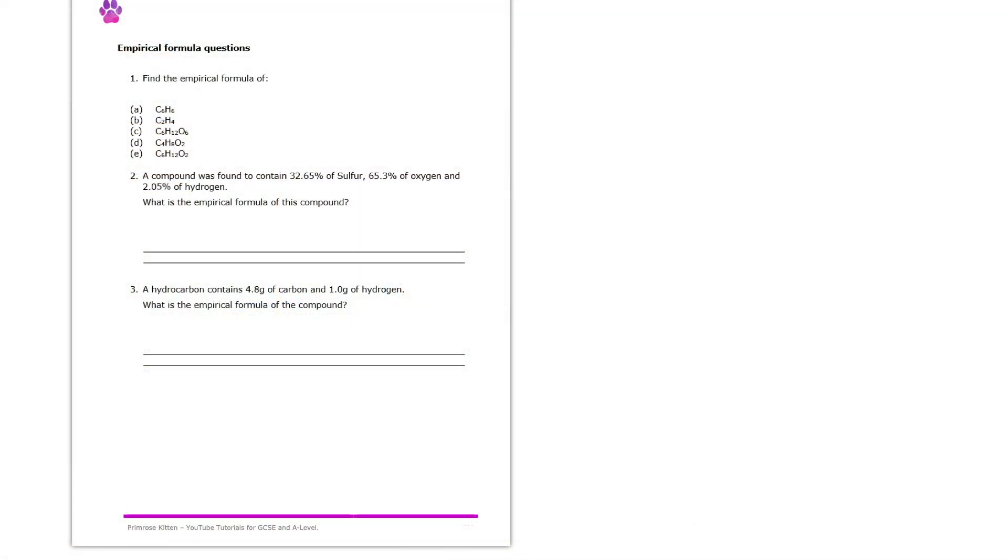Here we're going to have a look at some empirical formula questions. So to solve these, what we should get started with is just reminding ourselves of what an empirical formula actually is. An empirical formula is the simplest whole number ratio of atoms in a compound, and it's best thought of in contrast to what molecular formula is, which is the actual number of atoms in a compound.